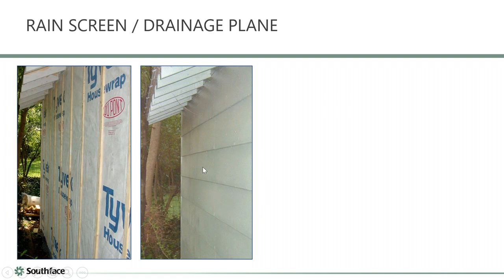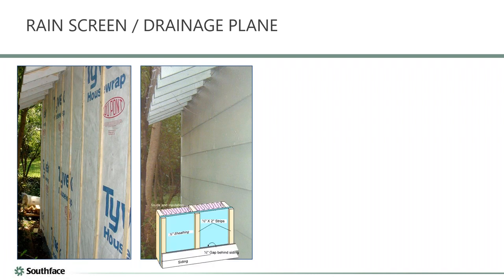You can apply the drainage plane principle to any cladding. On a building Mike constructed about 18 years ago using donated Masonite (wood fiber) siding — a product with a history of failures — he back-primed and edge-primed every piece and installed furring strips over the house wrap to create a vented cavity behind the siding. That building still looks freshly painted today. Even with fiber cement siding, creating a vented cavity improves durability and moisture forgiveness significantly.